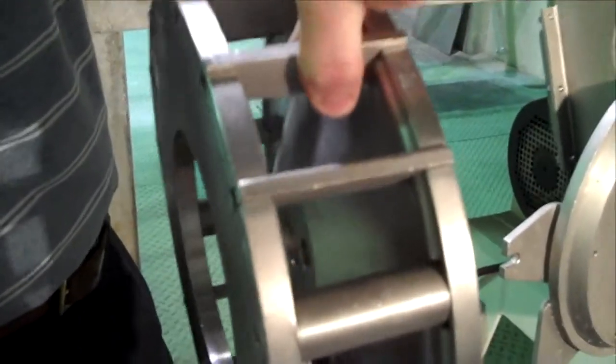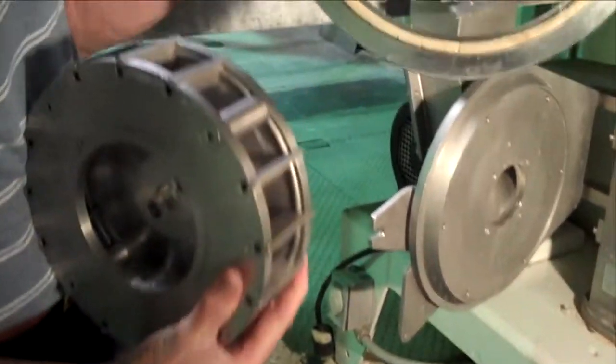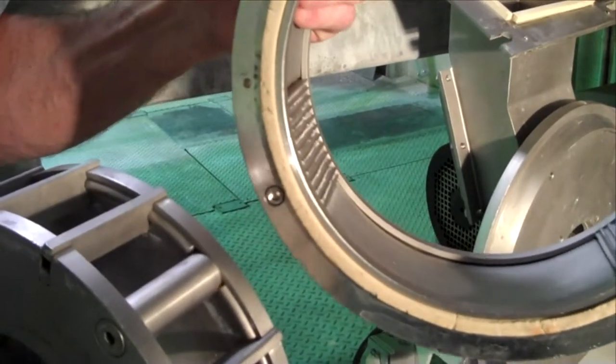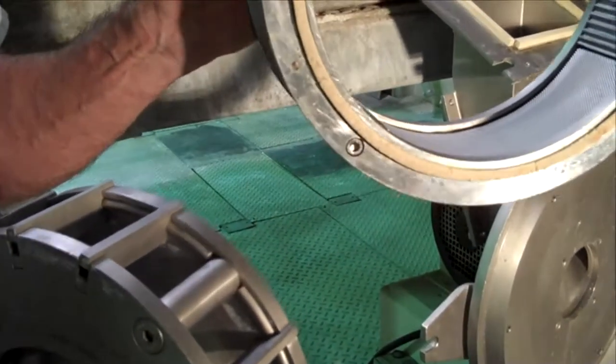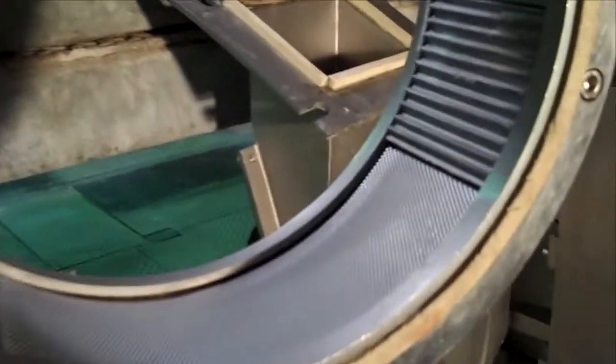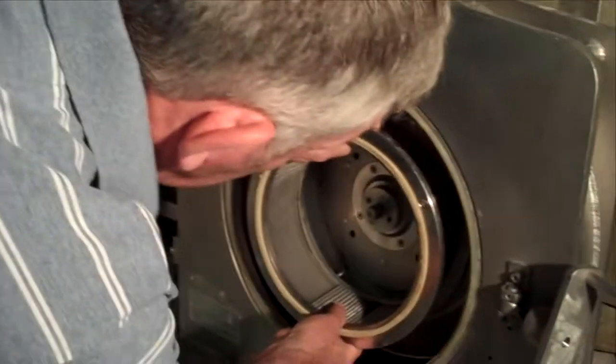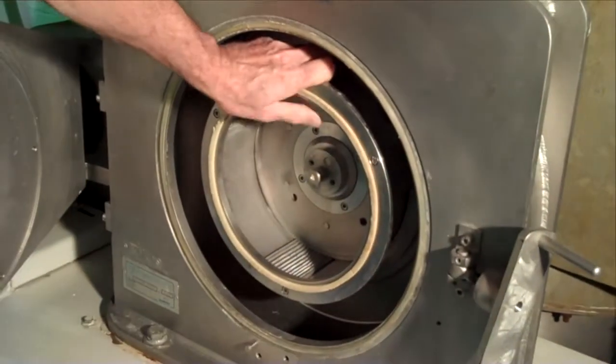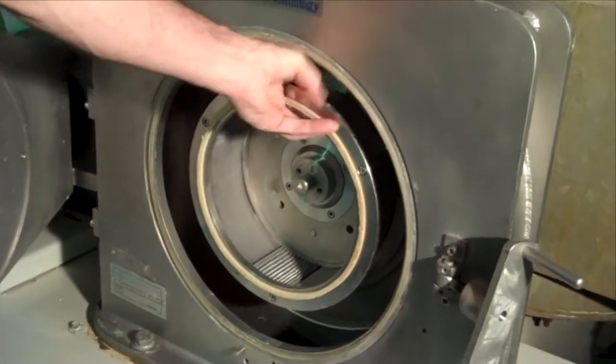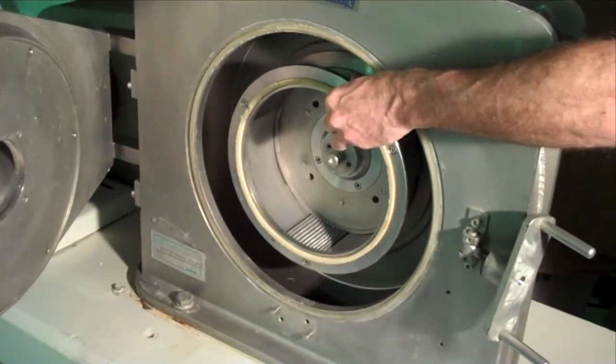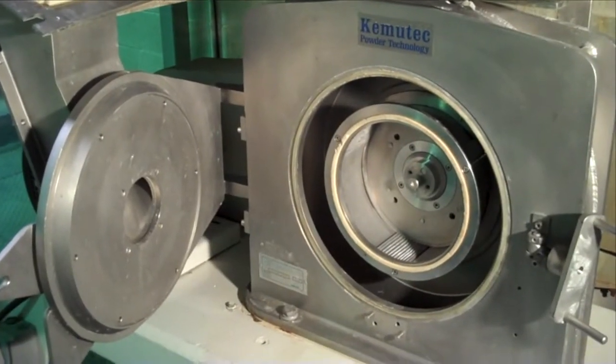The outer screen assembly shown here is stationary and provides a degree of classification and additional cutting with the inset cutter blocks. Fitting the screen assembly is a simple case of mounting it onto the back wall of the mill and fastening from behind. With the screen assembly in place, we can now fit the rotor which is simply mounted straight onto the drive shaft.